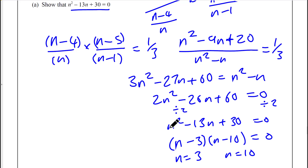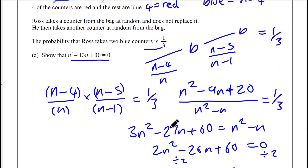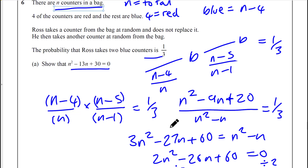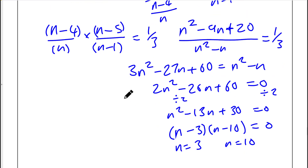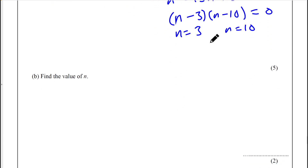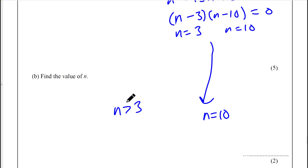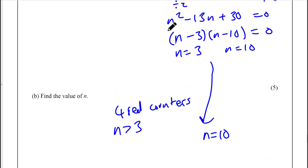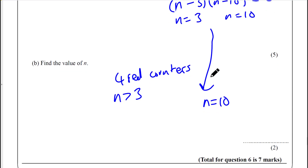Both solutions are positive, but we know there are 4 red counters in the bag, so n must be greater than 4. Therefore n cannot be 3, and n must equal 10. The working to show that equation was the main part; finding n equals 10 follows directly from rejecting n equals 3.